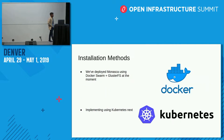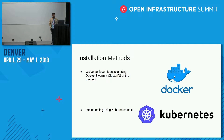Monasca can be deployed two ways: through Docker and through Kubernetes. In our setup, we deployed with Docker in swarm mode, using GlusterFS in the backend for a shared file system.